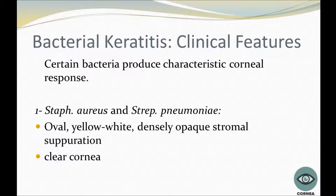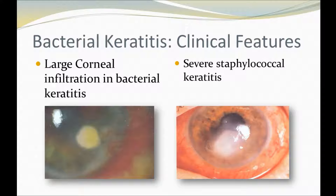About clinical features, certain bacteria produce a characteristic corneal response depending on the pathogen. For Staphylococcus aureus and Streptococcus pneumoniae, there can be an oval, yellow-white, densely opaque stromal suppuration with clear surrounding cornea. The pictures show clinical features: the first shows large corneal infiltration in bacterial keratitis, and the second shows severe staphylococcal keratitis.